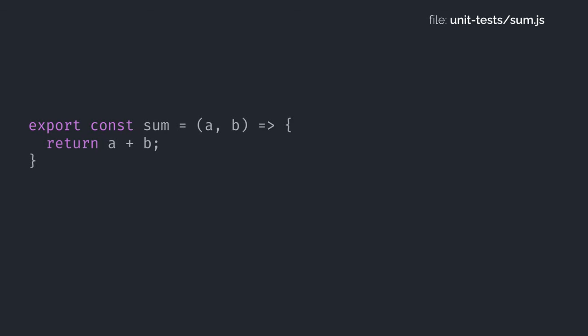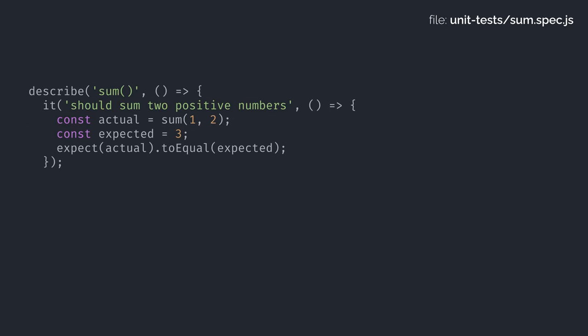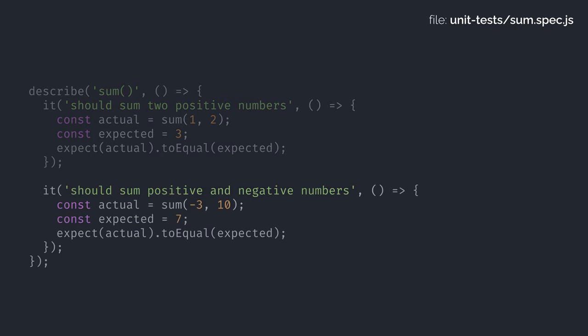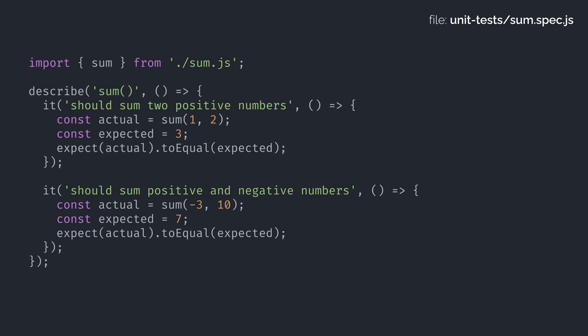Don't get hung up on a unit being either a function or a class — you decide what a unit means. Take into account the context of your project. If you're working on a blog, you could say that each article is a unit. Let's see a simple example of a unit test. Given a function called sum that takes two numbers and returns their sum, we could write some unit tests. For example, calling sum with 1 and 2 should return 3, and calling sum with -3 and 10 should return 7. That's how the code would look in a real unit test.